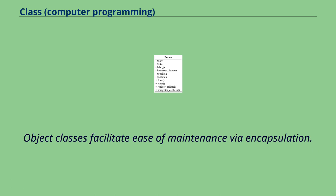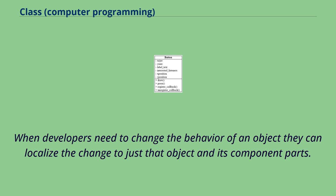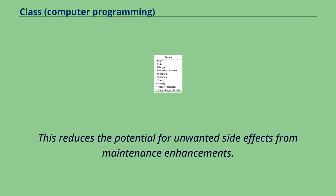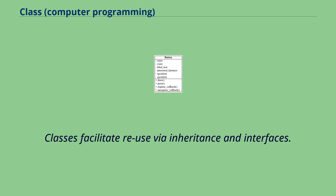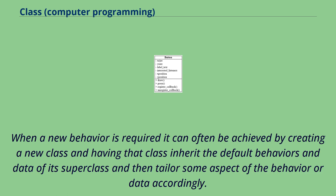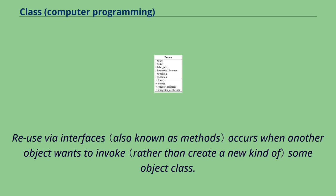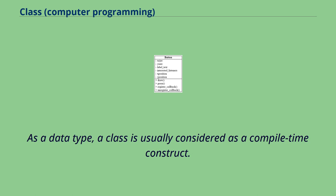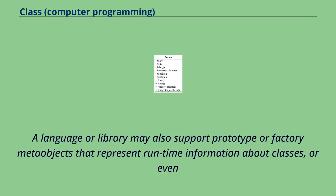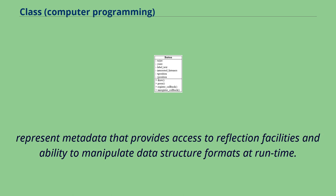Object classes facilitate ease of maintenance via encapsulation. When developers need to change the behavior of an object, they can localize the change to just that object and its component parts, reducing the potential for unwanted side effects. Software reuse is also a major benefit of using object classes. Classes facilitate reuse via inheritance and interfaces — when a new behavior is required, it can often be achieved by creating a new class that inherits the default behaviors and data of its superclass and then tailors some aspect accordingly. As a data type, a class is usually considered as a compile-time construct, though a language or library may also support prototype or factory meta-objects that represent runtime information about classes, including metadata that provides access to reflection facilities.